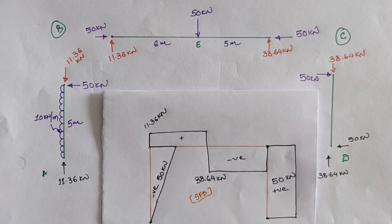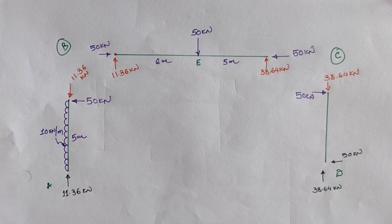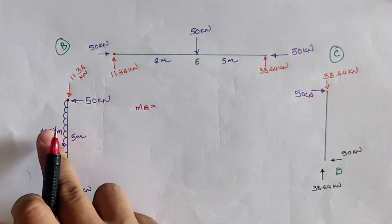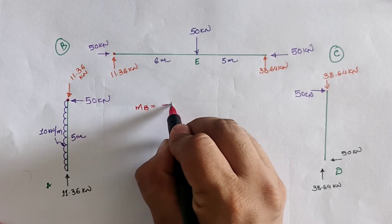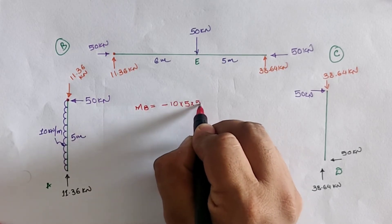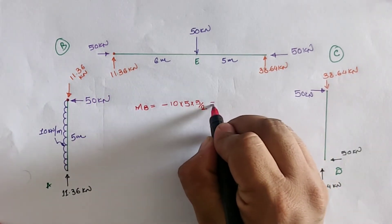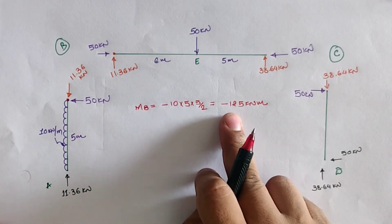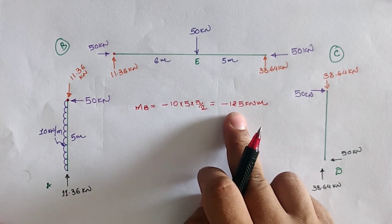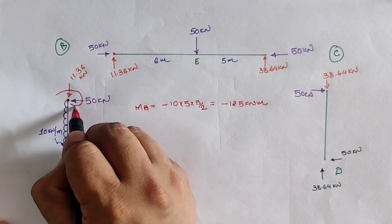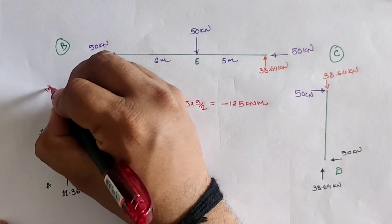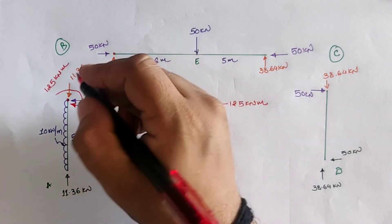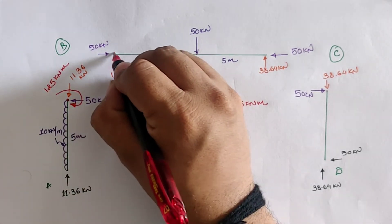Now we calculate the bending moment at different locations. Taking the bending moment at location B: due to the UDL, an anticlockwise moment is generated: −10 × 5 × (5/2) = −125 kNm. To equalize this moment we plot it as clockwise, with a value of 125 kNm. At B in the actual frame there is no external moment, so the opposite moment of 125 kNm is applied at B in the direction toward C.